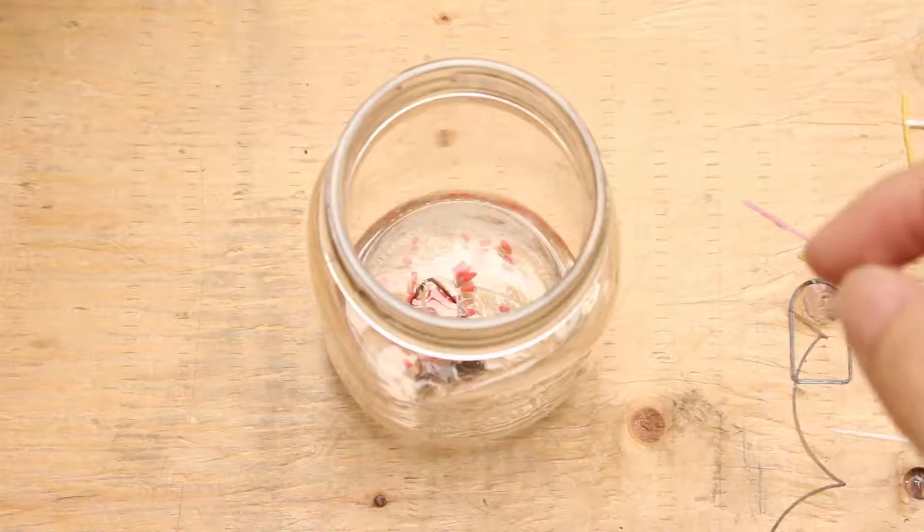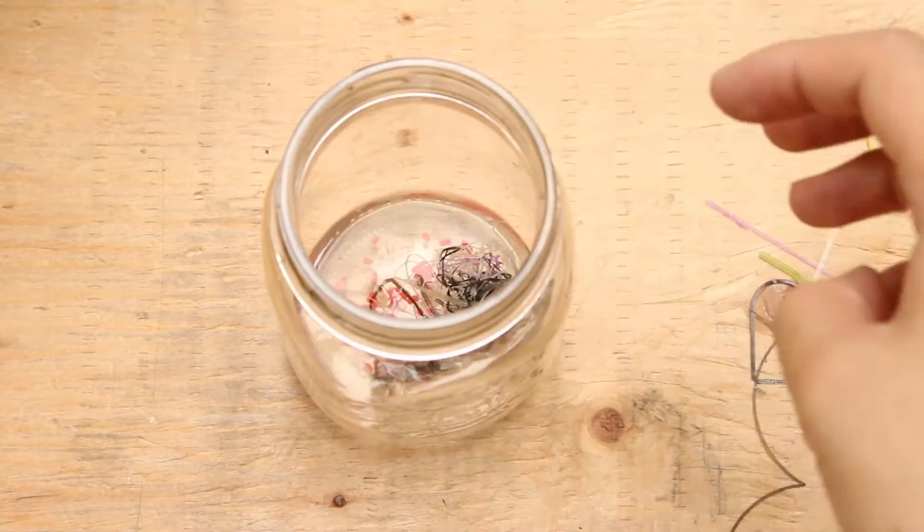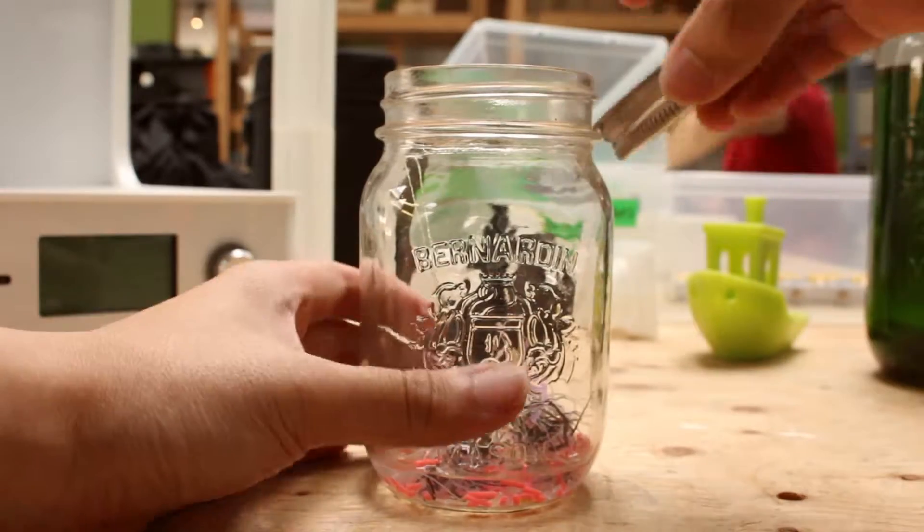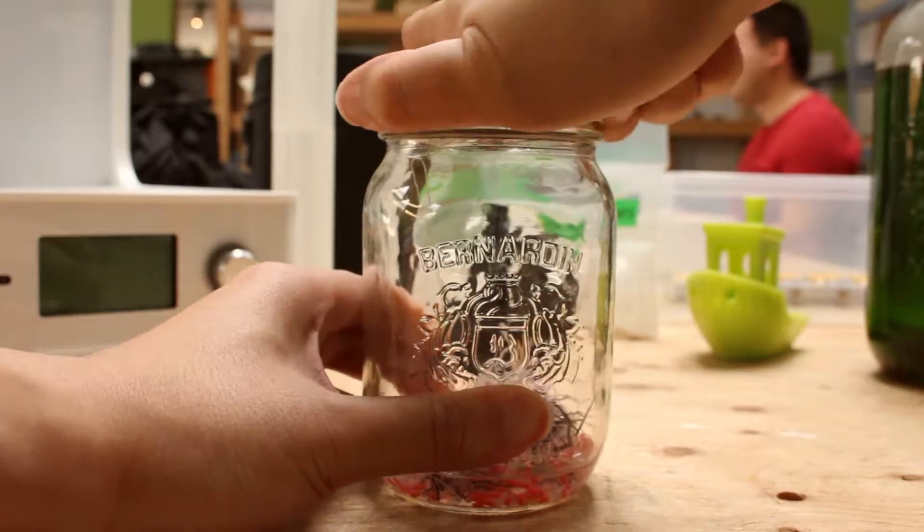I'm just going to throw in all the PLA scrap I gathered into the jar of acetone. Roughly 8 grams of PLA. And then try shaking it to see if I would get the same results as ABS.